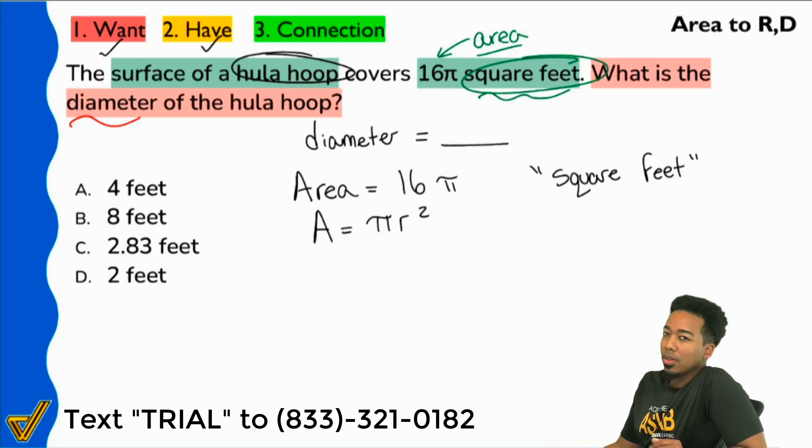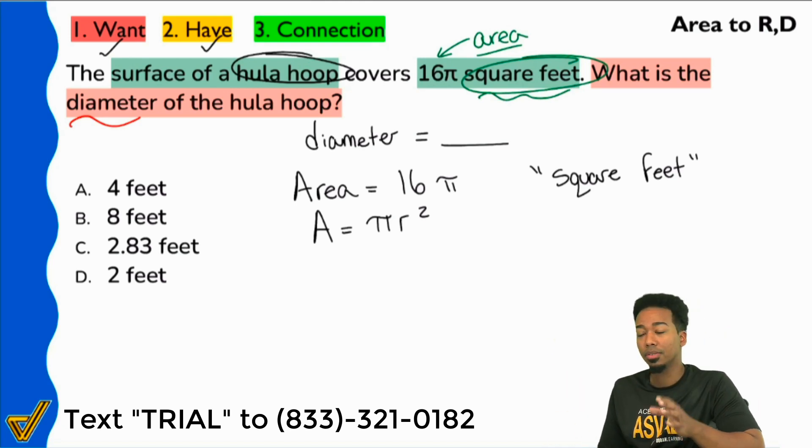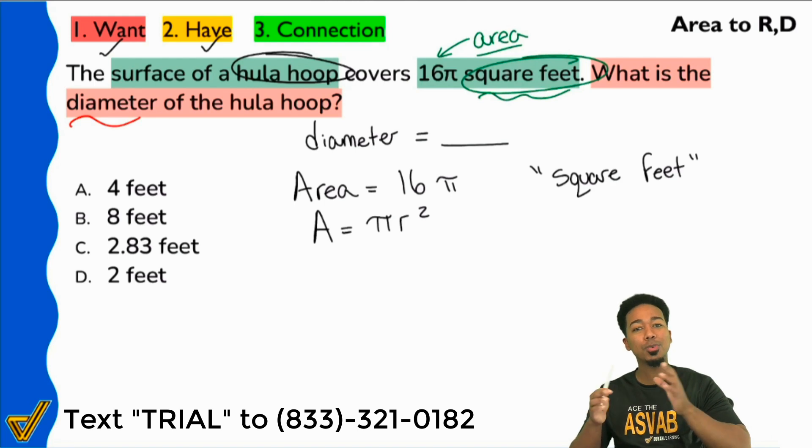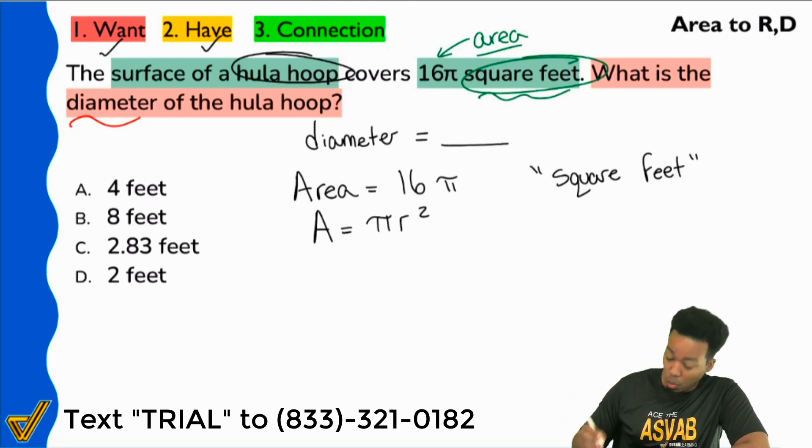Now, pay very close attention here. Notice how the problem says that we're looking for the diameter. The formula that we need to use right now, well, it talks about the radius. You have to ask yourself, once I solve this and get r, can I turn that into the diameter? Absolutely. Remember that the relationship between radius and diameter is that the radius is half of the diameter. Or you could say that the diameter is double the radius, whichever way you're looking, but that's the idea.